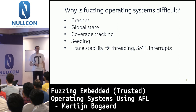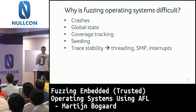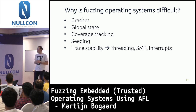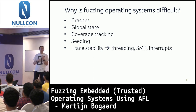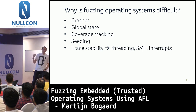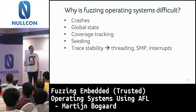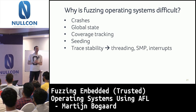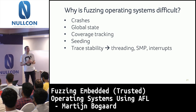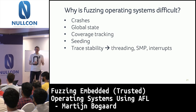What makes fuzzing operating systems difficult? If you have a critical error in your operating system, you most likely bring down the whole system — you need something running outside it to restart it. Another problem is global state: you'd like to start each fuzzing input with a clean or consistent state, but in an operating system that means rebooting every time, which can take seconds to up to half a minute — not ideal when fuzzing at high speed.